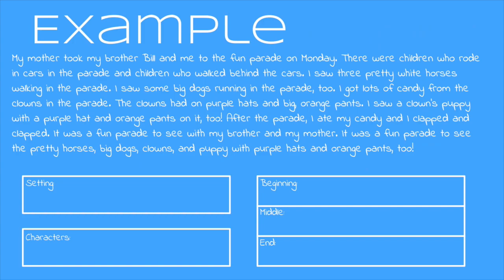Read along with me. My mother took my brother Bill and me to the fun parade on Monday. There were children who rode in cars in the parade and children who walked behind the cars. I saw three pretty white horses walking in the parade. I saw some big dogs running in the parade too. I got lots of candy from the clowns in the parade. The clowns had on purple hats and big orange pants. After the parade I ate my candy and I clapped and clapped.